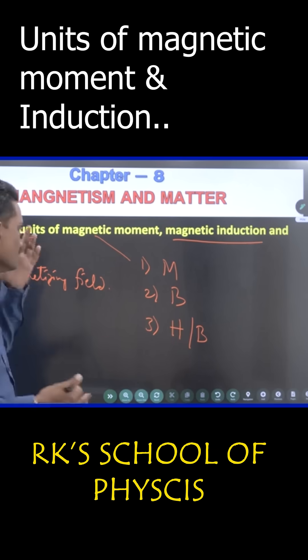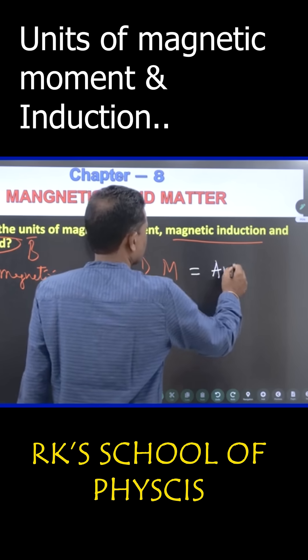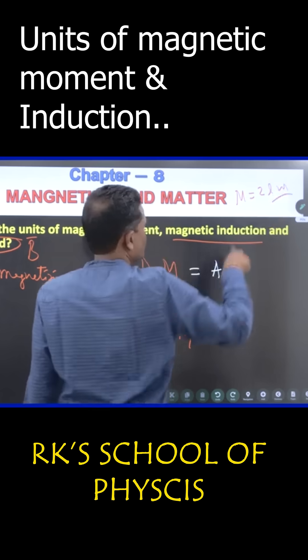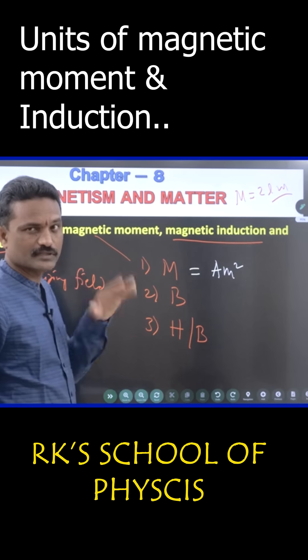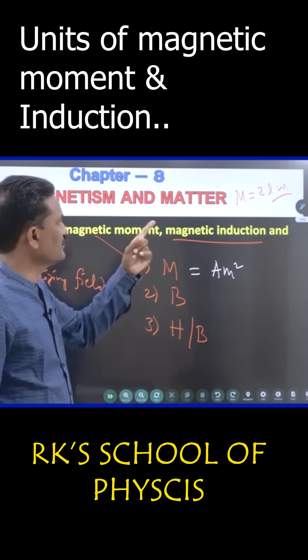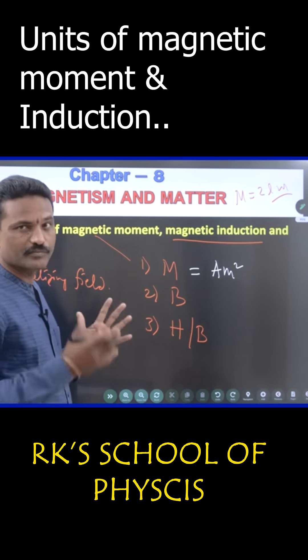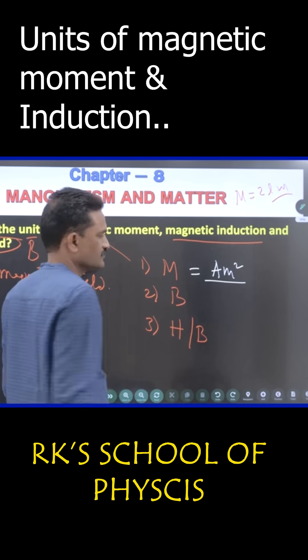Magnetic moment is ampere meter square. Magnetic moment is 2LM. If you remember, L is length measured in meter. 2L is also called magnetic length. M is pole strength. Pole strength units are ampere meter, so meter into ampere meter will become ampere meter square. One mark.